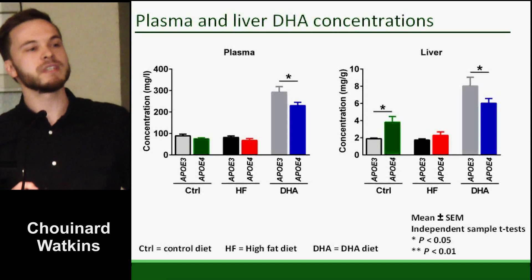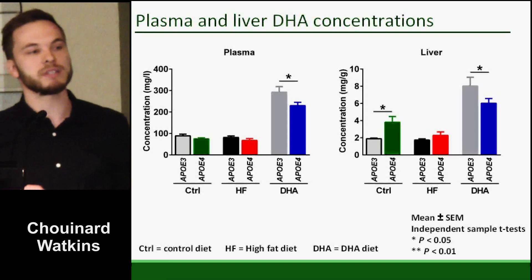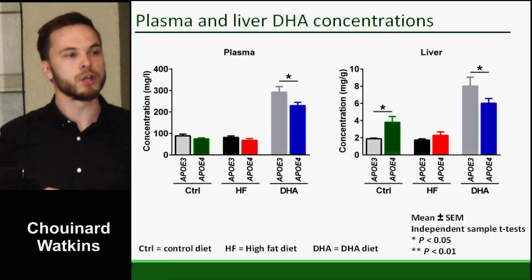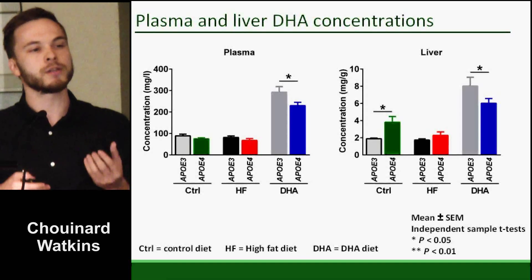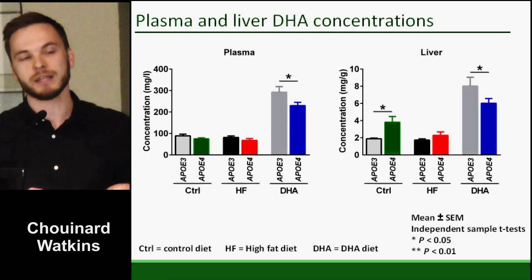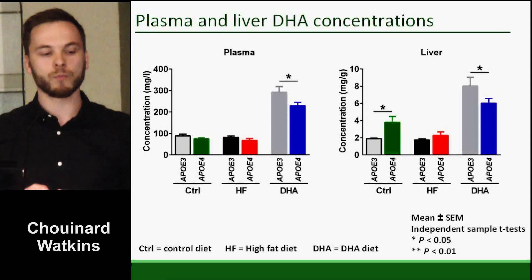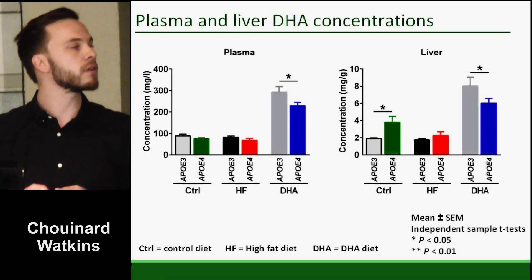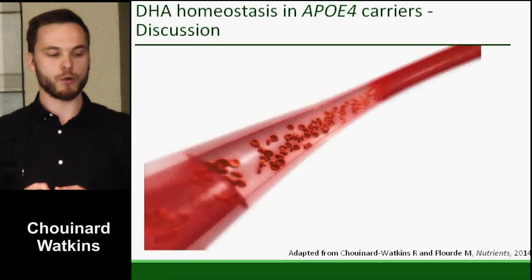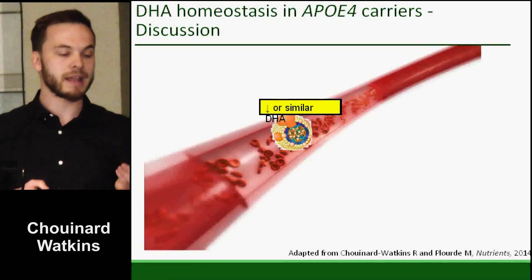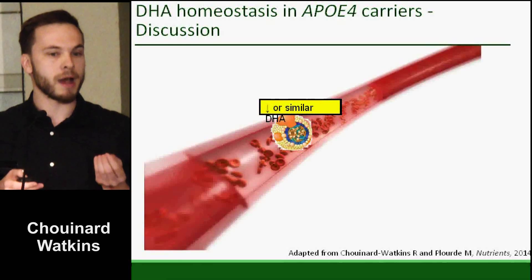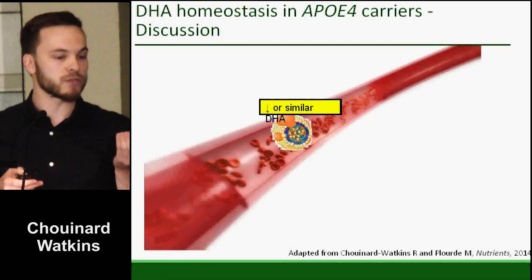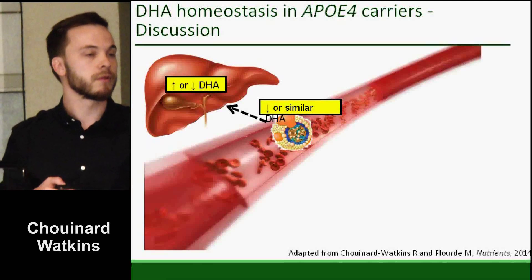On the other hand, being a carrier of the apolipoprotein E epsilon-4 allele — which I'll call ApoE4 from now on — is the most important known genetic risk factor for developing cognitive decline to date. What's interesting is that ApoE4 carriers do not seem to gain the same cognitive benefits from fatty fish consumption compared to non-carriers. So we asked ourselves: is it because of a dysfunction in DHA metabolism?